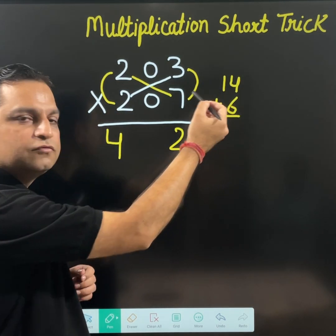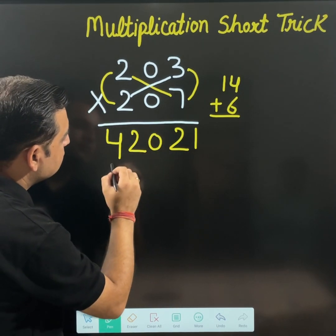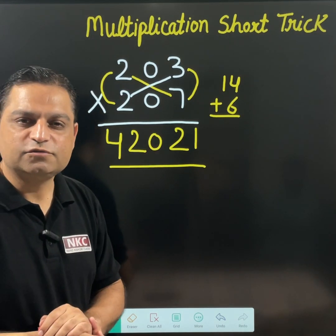Just add them. 14 plus 6 is 20. That means this is the final answer for this product.